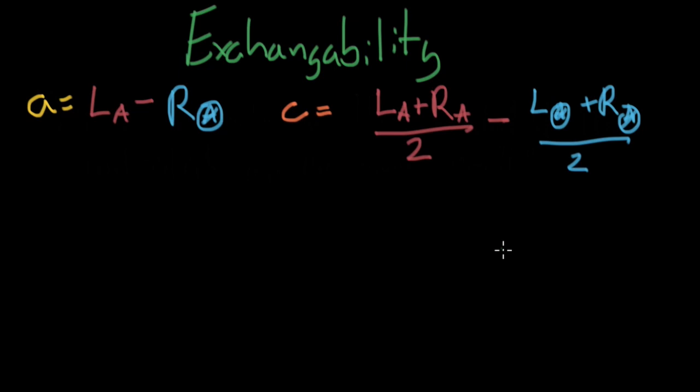So we're doing exchangeability part two. This is where we finish the proof and we understand why exchangeability is necessarily so important. If you didn't necessarily see exchangeability part one, check the right-hand side and go back and watch that first.